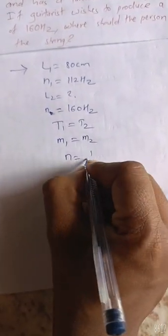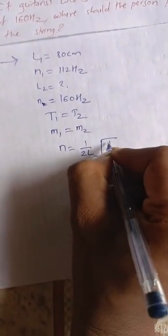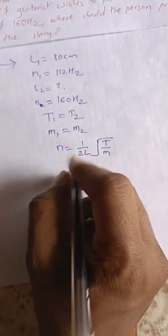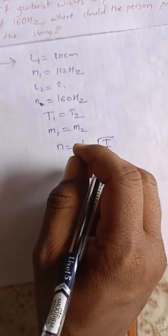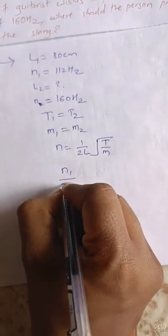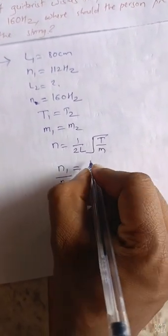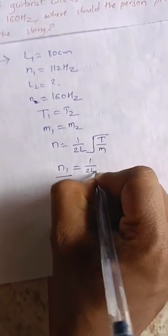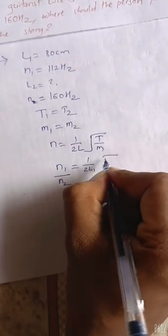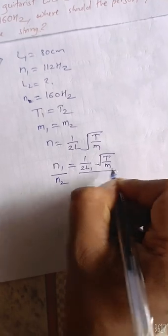The formula is n is equal to 1 upon 2L root T upon m. We have two wires with the same properties, so we can find the frequency ratio n1 upon n2. n1 is equal to 1 upon 2L1 root T upon m.